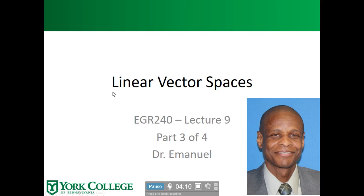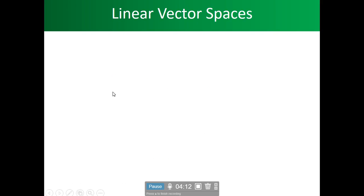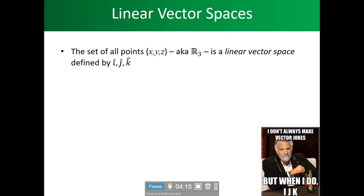Now, when we talk about linear vector space, what are we talking about? The set of all points in x, y, z, whereas all real numbers. That's what this represents, all real numbers, in a linear vector space, defined by i, j, k. We have used extensively the vector r equaling x i, y j, z k.